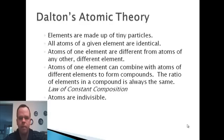Dalton's atomic theory was made up of a number of different parts. Four main parts here. First, elements are made up of tiny particles. All atoms of a given element are identical. So if you have an atom of hydrogen, he said it was identical to every other atom of hydrogen. Third, atoms of one element are different from atoms of another different element. So hydrogen atoms and nitrogen atoms are different from one another.